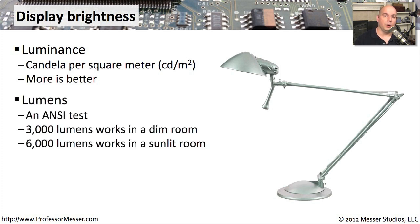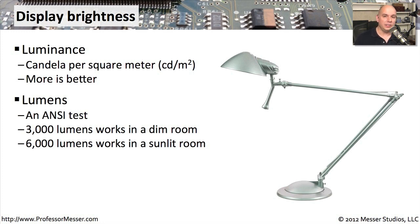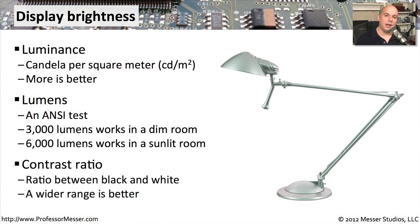Another measure is the number of lumens, used a lot for digital projectors. A projector providing 3,000 lumens tends to work very well in a dim room, while one that puts out 6,000 lumens will work well even without covering up all the light coming in from outside. Another important measurement is the contrast ratio — the measurement between the blackest black compared to the whitest white. We want the widest range, and the larger that ratio, the higher the quality of the picture.